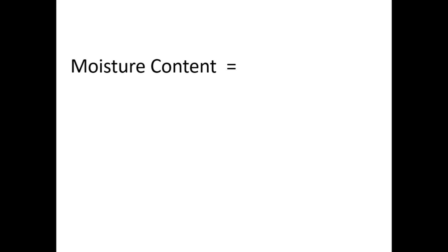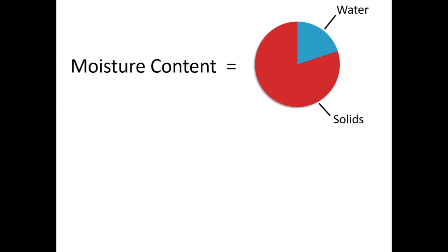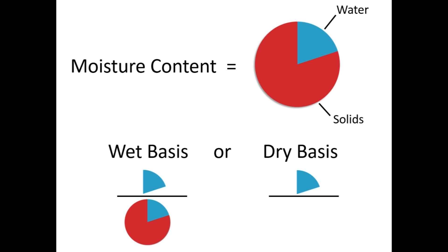Moisture content is the amount of water contained in the material. It is commonly reported on either a wet basis or dry basis, which we calculate as follows. Wet basis moisture content is equal to the mass of water in the sample divided by the total mass of the sample. Dry basis moisture content is equal to the mass of water in the sample divided by the mass of solids in the sample.